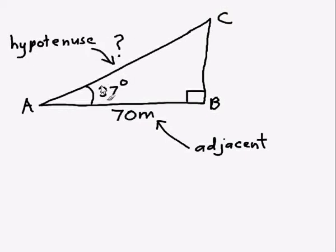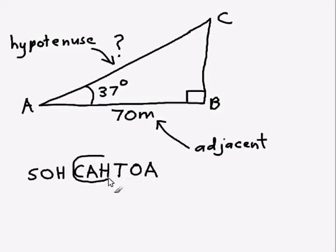So we know an angle and we know the adjacent side and we want to find out the hypotenuse side. So what we can do is we can use our little saying, SOHCAHTOA. Sine is opposite over hypotenuse. Cos is adjacent over hypotenuse. And tan is opposite over adjacent. SOHCAHTOA. Now we've got the adjacent and the hypotenuse. So what we need to use is cos.